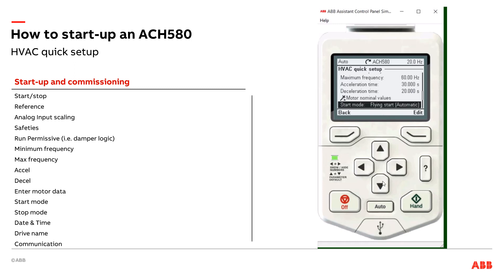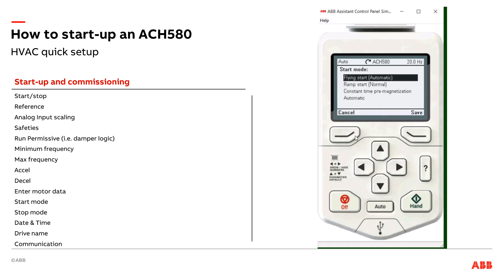Next item is your start mode. Usually this will be left at flying start automatic — that's where if the motor's still spinning, the drive can catch it and pick it up and ramp it to where you need it to go. Not necessarily needed for a pump application, so you could adjust that to ramp start. But if you left it at flying start for a pump, not a problem.